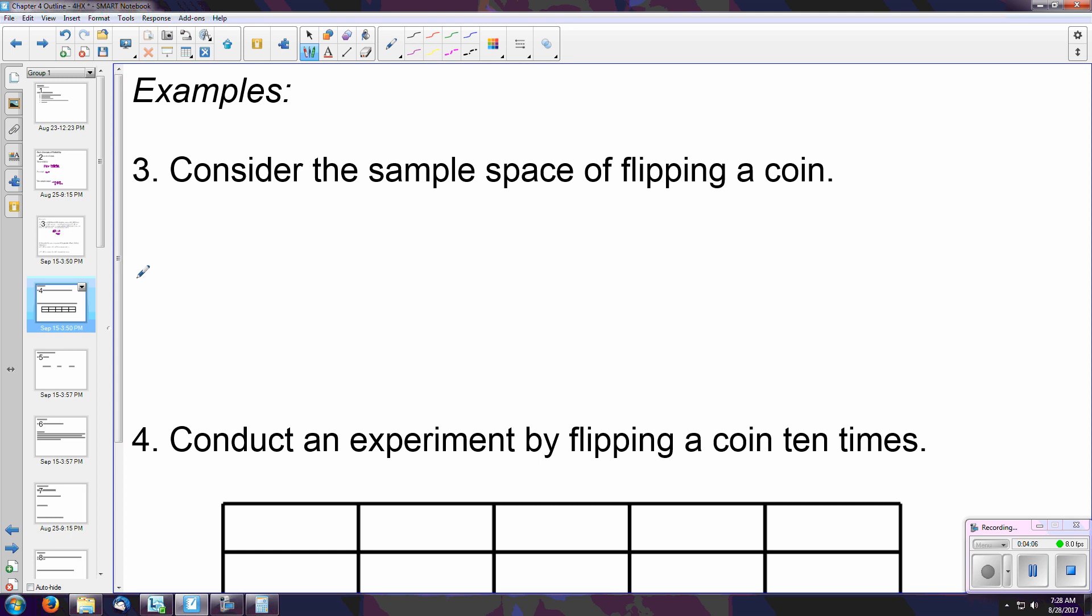Consider the sample space of flipping a coin. If you just flip that coin once, we said earlier, what could happen? We could either have heads or we could have tails. Those are the only two possible outcomes.